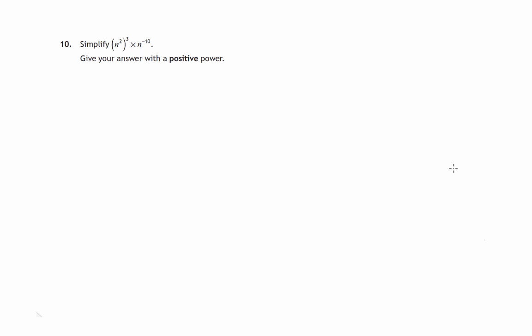So here we have a question that will involve the laws of indices. We've got an algebraic expression n squared raised to the power 3, we're multiplying that by n to the negative 10, and we're asked to simplify that giving an answer with a positive power.